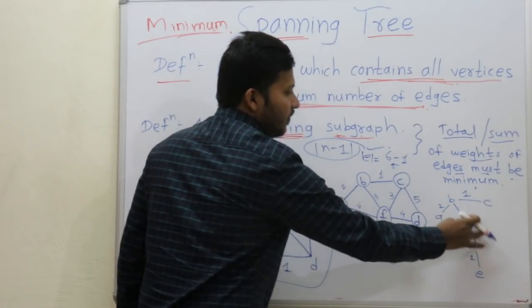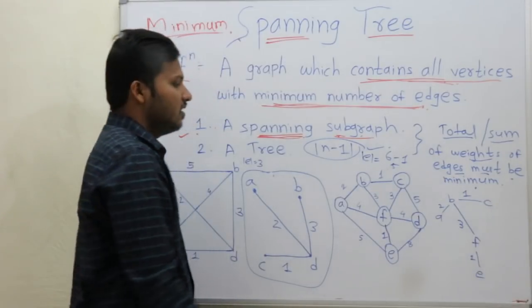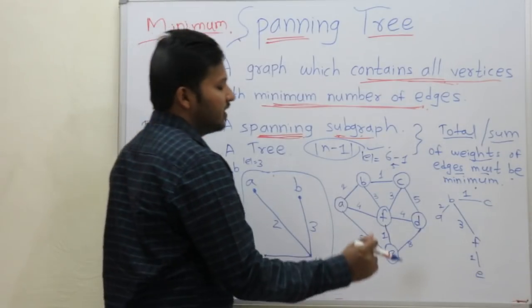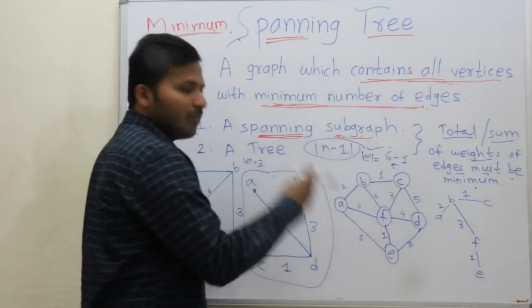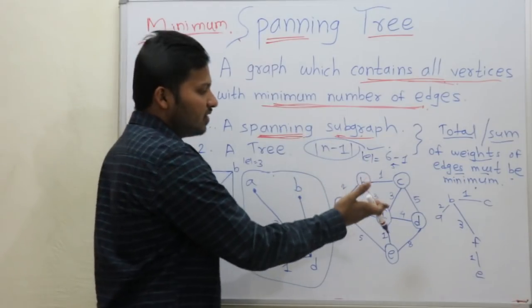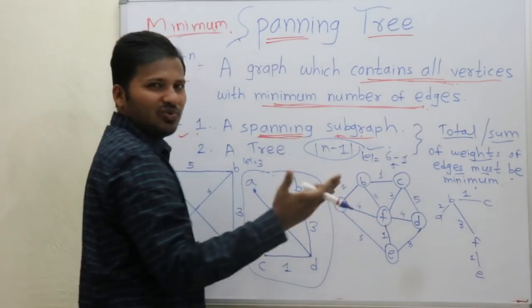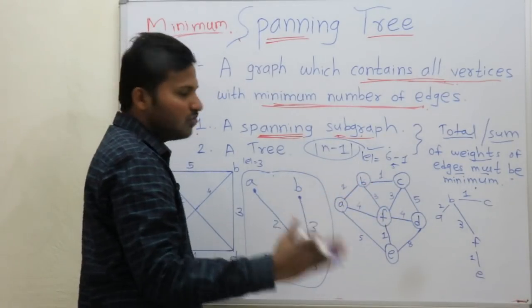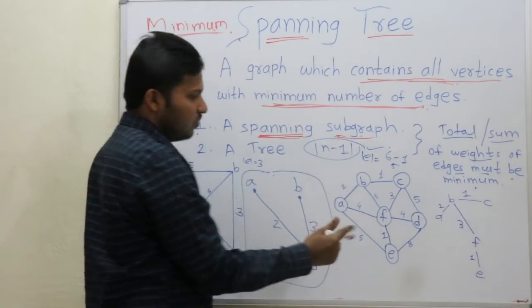This is an example of forming a cycle, so you should not take that edge. Go for an upper value or any other edge with value 3 — there is no edge with value 3.